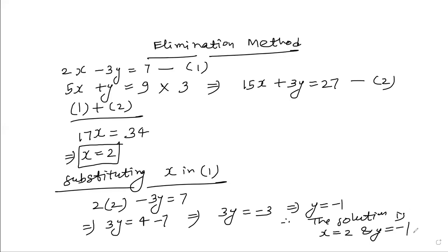Therefore, the solution is x = 2 and y = −1. Note: if after making coefficients equal both terms are positive or both negative, you subtract instead of add to eliminate the variable. That depends on the situation. That is the elimination method.